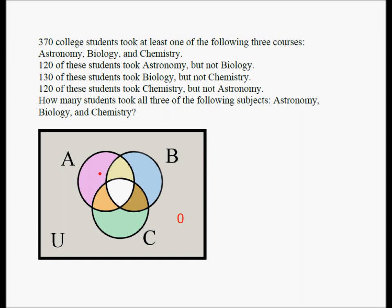Now, the other numbers should go into all these seven remaining regions: one, two, three, four, five, six, seven. And we want to know the number that goes here because the final part of the question asks us how many students took all three of the following subjects: astronomy, biology, and chemistry.